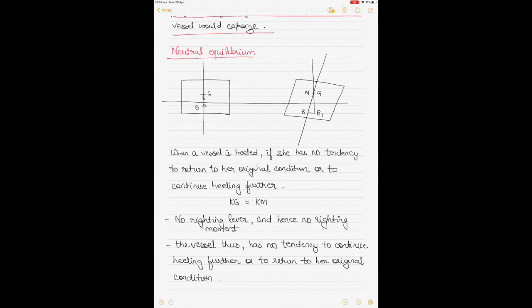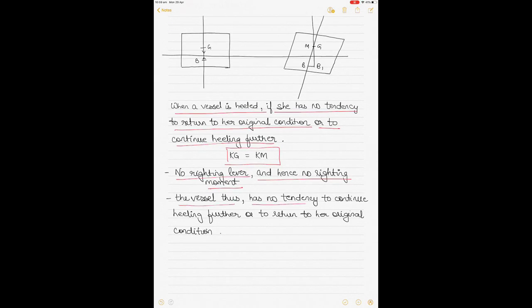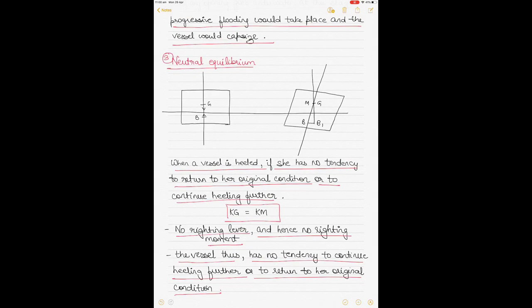The third type is neutral equilibrium. When a vessel is heeled and has no tendency to return to her original condition or to continue heeling further — as at the angle of loll — KG equals KM. There is no righting lever GZ, and hence no righting moment to bring the vessel back upright. The vessel has no tendency to continue heeling or to return to her original condition. This is not suitable for navigation.